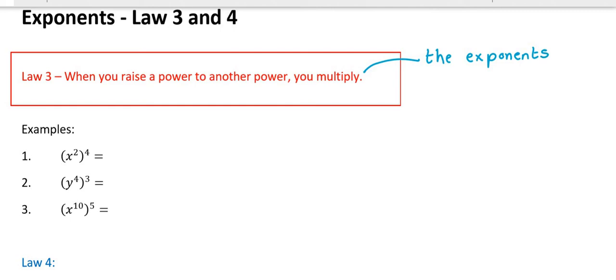I've put three examples here. If you have x to the power of 2 raised to the power of 4, that's raising a power to another power, so you multiply: 2 times 4 is 8. Next, y to the power of 4 raised to the power of 3 — multiply the 4 and the 3 — gives x to the power of 12. And x to the power of 10 all raised to the power of 5 gives x to the power of 50.